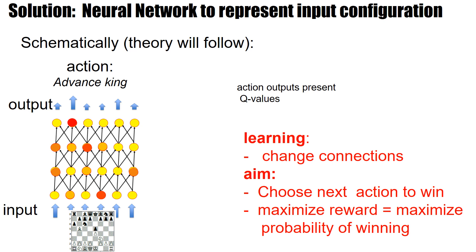The idea is that we use a neural network or some other parameterized representation — a model — and then we adjust the parameters of the model, changing the connection weights so that the output gives us the Q values for different actions given the current state S. The state S is encoded in the hidden layers of the neural network.